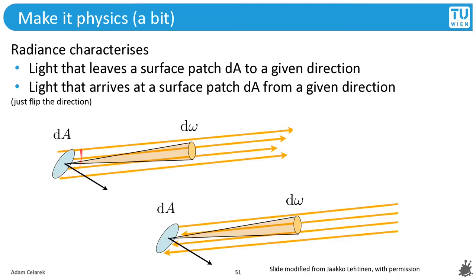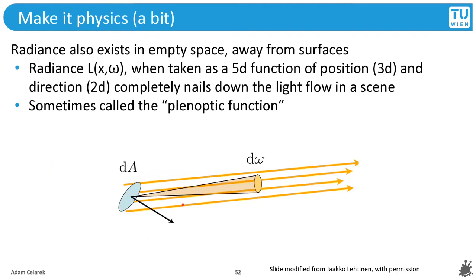When light leaves a certain surface patch into a certain direction, this is radiance. Light arriving at another surface patch is radiance as well. We just flipped the direction. Radiance exists in empty space away from surfaces. So you can take a 5D function, three dimensions for the position and two dimensions for the direction, and this function can completely describe how light behaves in this point. Sometimes this is called the plenoptic function.